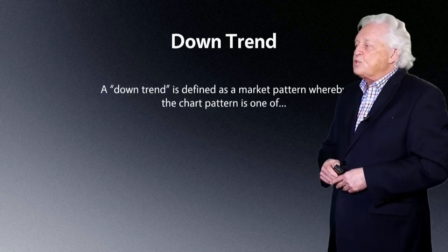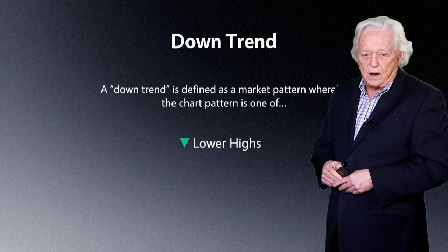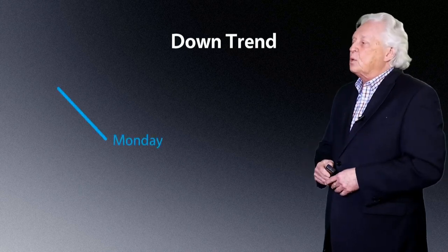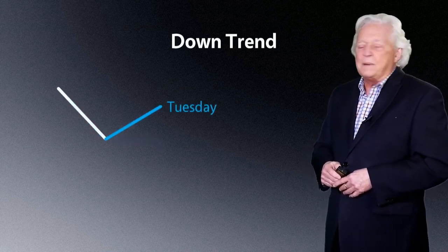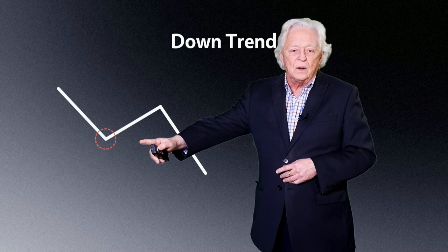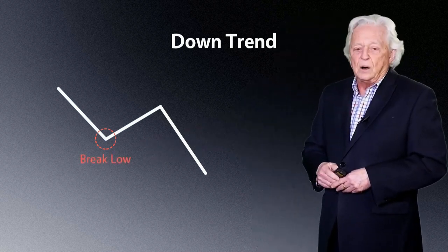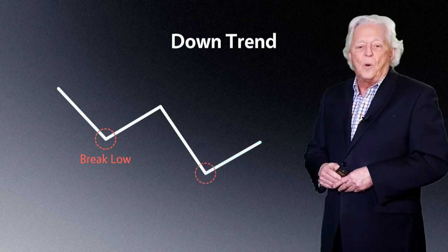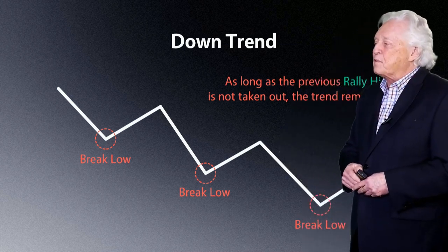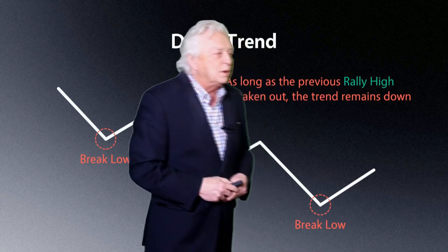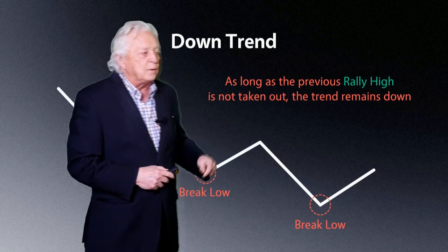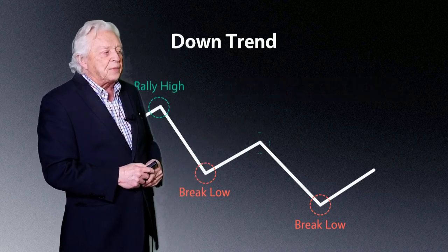The downtrend is the flip-flop of it. In a downtrend you define a market pattern which is one of lower highs and lower lows — you'll hear traders all over talk about that, it's not just me. Starting with Monday, the market comes back up and we have that pattern — that's going to be our break low. Then on Wednesday and Thursday we have a lower break low, and so on. The key here: as long as the previous rally high is not taken out, the trend remains down. You don't want to take out that high — and there are your rally highs.